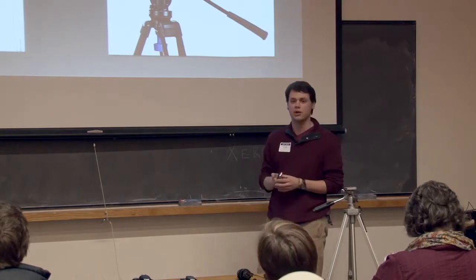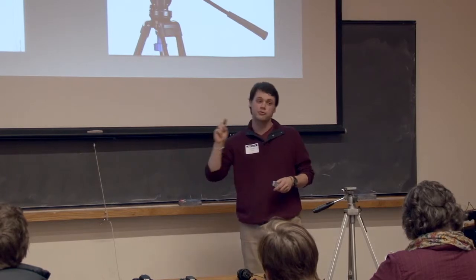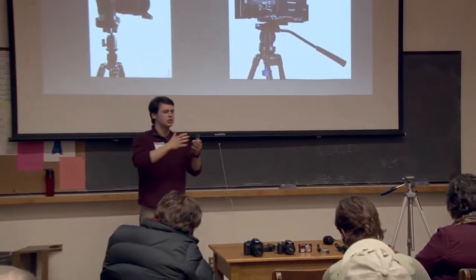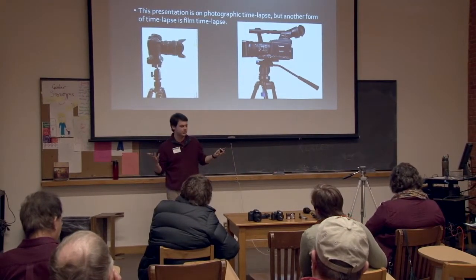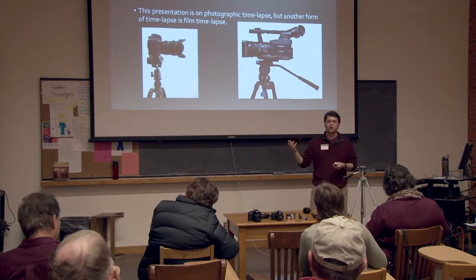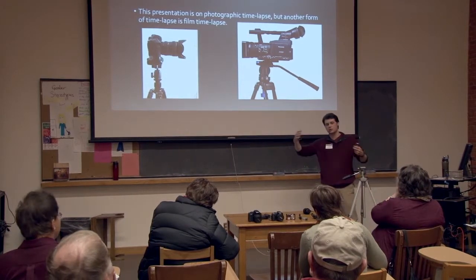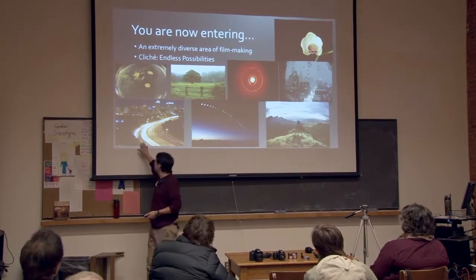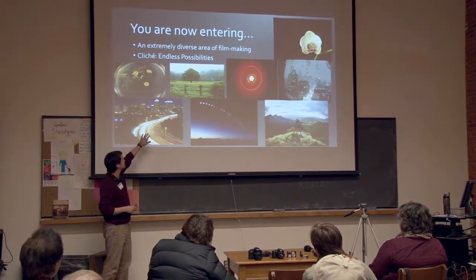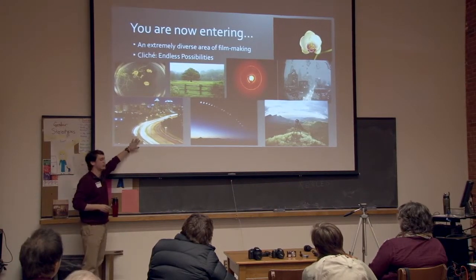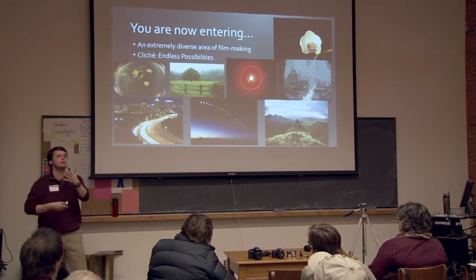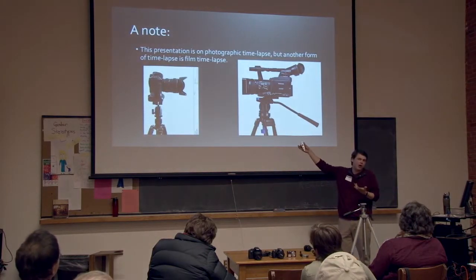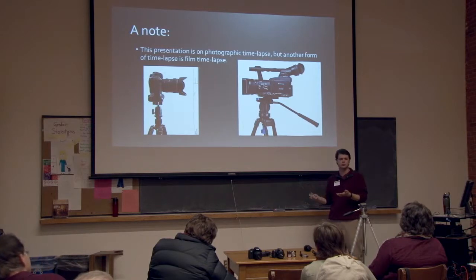There are two forms of time-lapse: film time-lapse and photographic time-lapse, the difference being what subject you're going to record. Photographic time-lapse is more applicable to things that take a long time to unfold — for instance, flowers blooming over eight days. Film time-lapse is more readily applied to things that last a long time but have a lot going on within, like a highway shot where everything is blurred by manipulating your shutter speed.